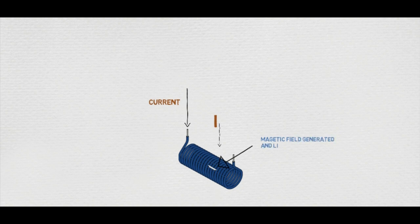As there is generated EMF, one side will be positive and another side will be negative. Due to the potential difference, current will try to flow, and this will try to flow in the opposite direction. The current was flowing from one direction, and now the current will flow from the opposite direction that has been developed.